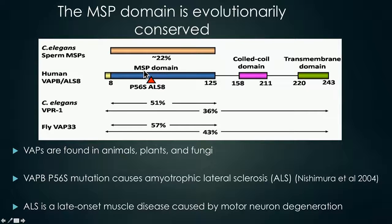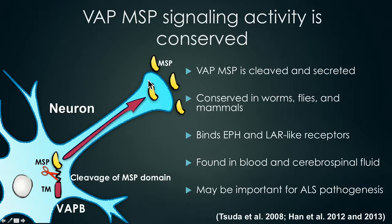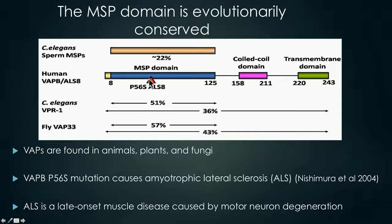These VAPs have homologs in different species. In C. elegans, the homolog is called VPR1, and in humans the homolog is called VAPB or ALS8. ALS stands for amyotrophic lateral sclerosis, and it is a late onset neurodegeneration disease. Specifically, this P56S mutation in the MSP domain is thought to cause ALS.